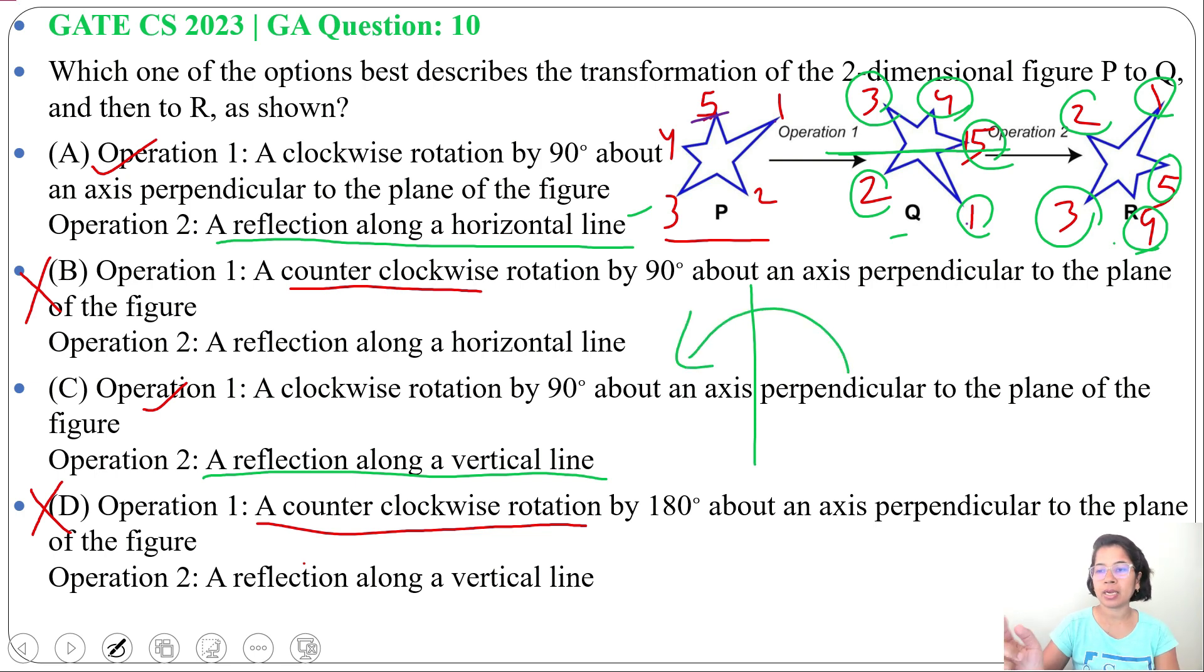In case of vertical, 4, 5, 1 will be left side. 2, 3 will be right side. It's a horizontal reflection, not vertical. Vertical will be like this. Option C is wrong due to operation 2.